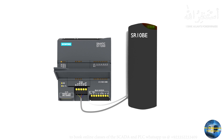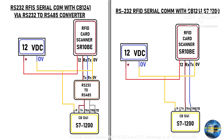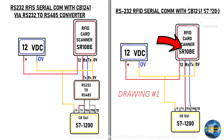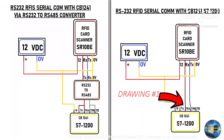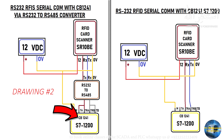Let's first see the wiring diagram for today's project. We are using an RFID scanner with serial data output. We have tested two wiring configurations. In the first diagram, we have connected directly the RS-232 serial RX and TX lines of the RFID module to the RS-485 CB1241 card of the S7-1200 PLC. We have also tested the communication by inserting an RS-232 to RS-485 converter in between the RFID scanner and the CB1241 card, as shown in the second diagram.